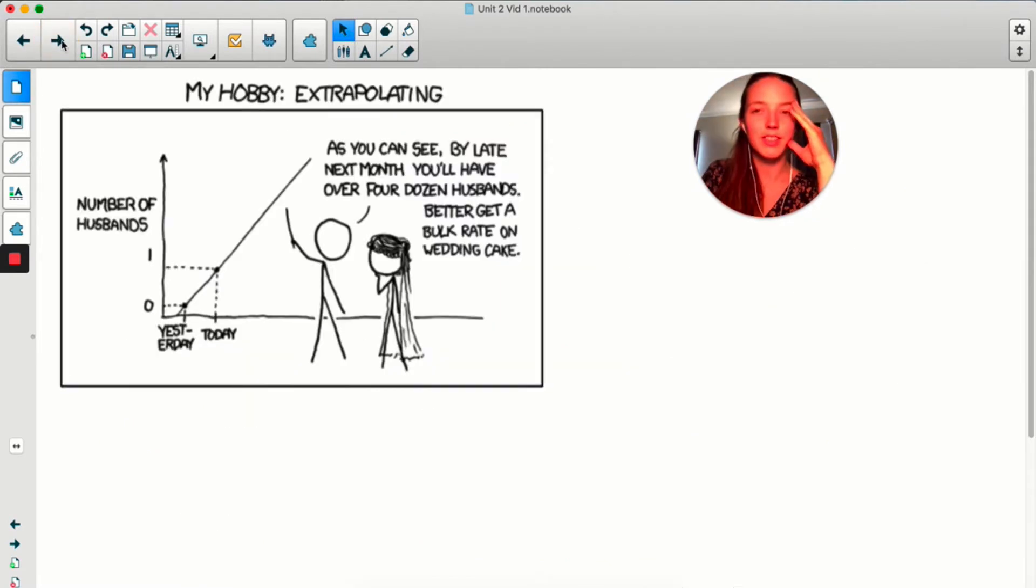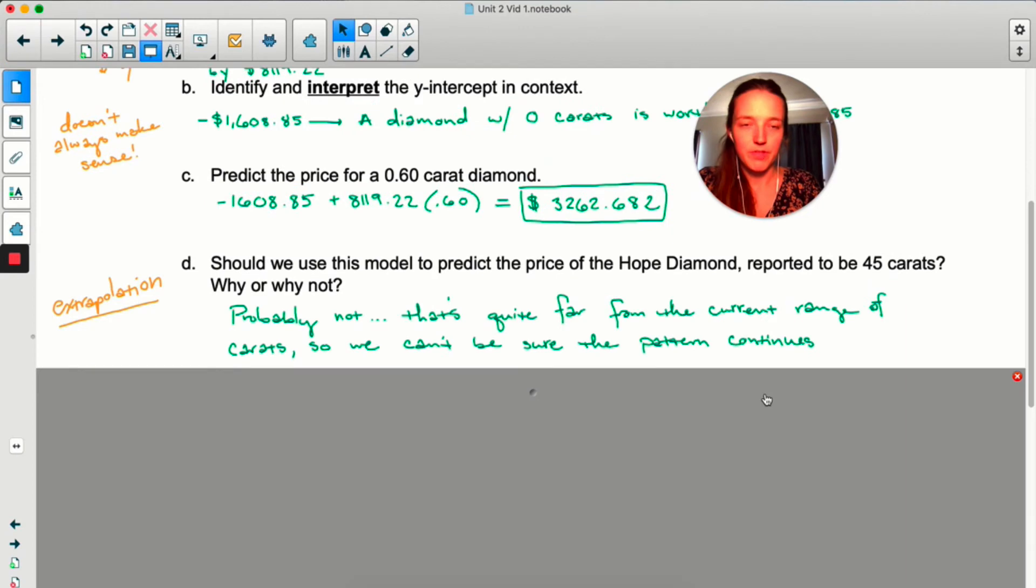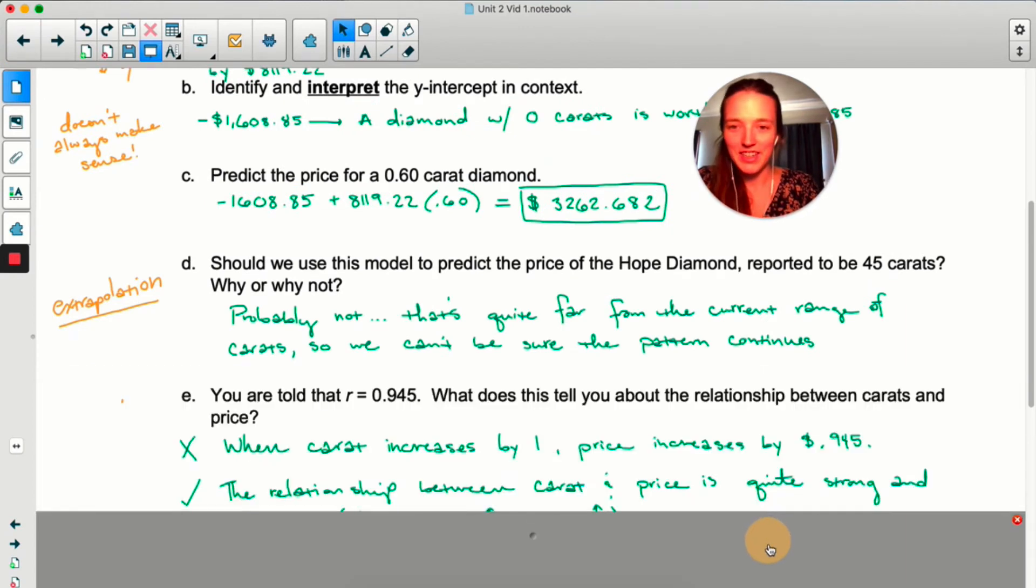This is my favorite, what is this comic called? I always forget. XKCD. XKCD, that's it. This is a perfect example of extrapolation. Yeah, I don't know, it's been printed on my bulletin board in my classroom for years. So long story short, try not to extrapolate.